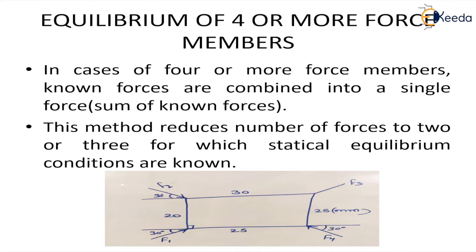They are combined in such a way that the whole system having four or more force members is reduced to a system having two or three force members, because we know the condition of static equilibrium for two and three force members.